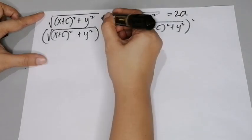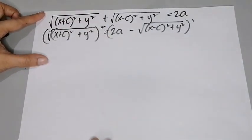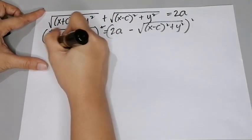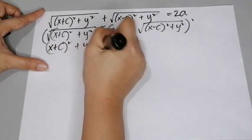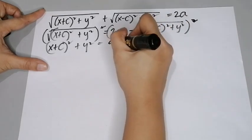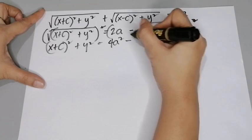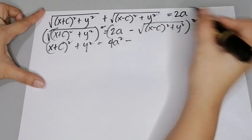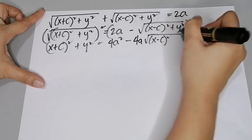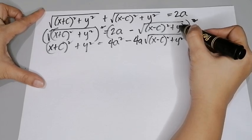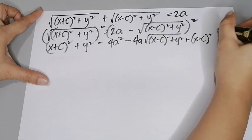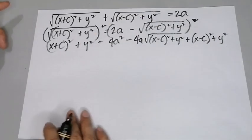Squaring both sides, the left side gives (x+c)² + y². The right side is a binomial quantity squared, so you'll have 4a² minus 4a times the square root of (x−c)² + y², plus (x−c)² + y².